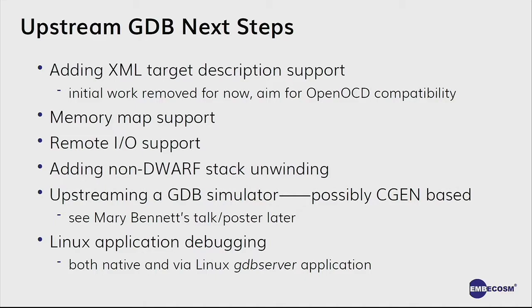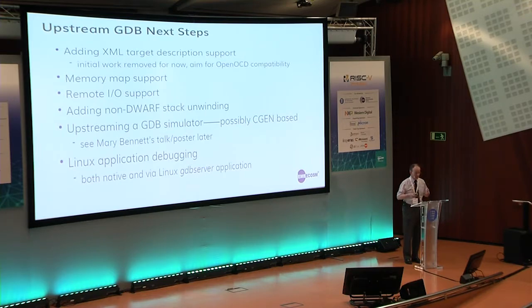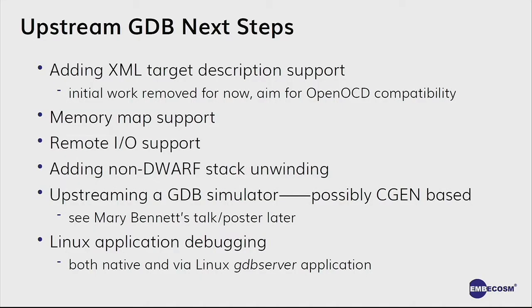So what do we need to do next? One of the first things is to add XML target description support, where when you fire up GDB and connect to a target, it tells you about its properties — how many registers it has, how wide they are, and so on. OpenOCD and Tim Newsome support that, but it wasn't complete, so when we upstreamed we took it out because you can't have partial work in the upstream. We want to put that back in as our first priority — it'll stop the problem where you tell the client you've got one flavour of RISC-V and the target is actually a different one. We also want to add memory map support so the target can report back where it has ROM, RAM, or flash, and GDB understands it can't write a software breakpoint into ROM.